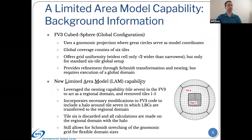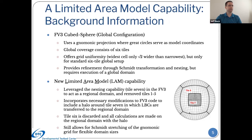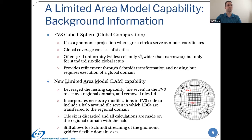Some background on the limited area model capability. A lot of you have now gotten up to date on the FV3 CubeSphere grid. It uses a gnomonic projection with great circles as the model coordinates, as you see an example here with a global configuration. The six tiles cover the globe in total, and it offers good grid uniformity — where your widest cell is only square root of two wider than the narrowest cell. But that's only true for the six-tile global setup. Once you try and create some refinement over a specific area using a Schmidt transformation, or nesting, then this grid uniformity goes out the window and you've got larger grid deformity over your domain, which is really not what we would prefer.